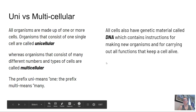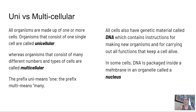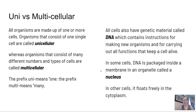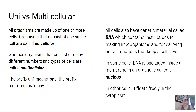All cells also have genetic material called DNA, which contains instructions for making new organisms and for carrying out all functions that keep a cell alive. In some cells, DNA is packaged inside a membrane in an organelle called a nucleus. In other cells, it floats freely in the cytoplasm — so when we're talking about a prokaryote that did not have a nucleus, its DNA is floating around in the cytoplasm.